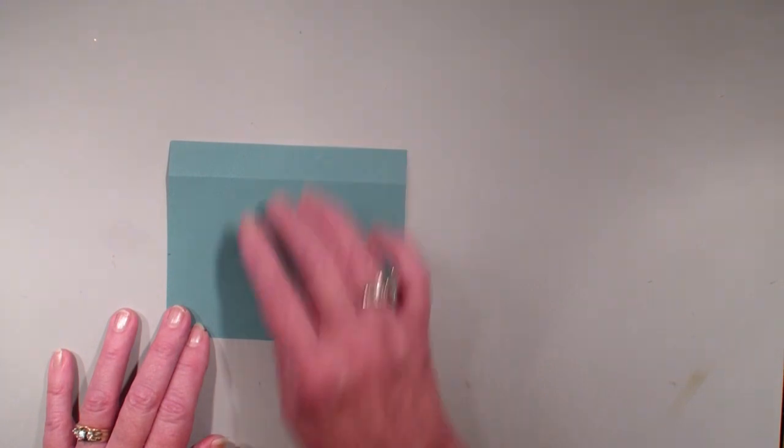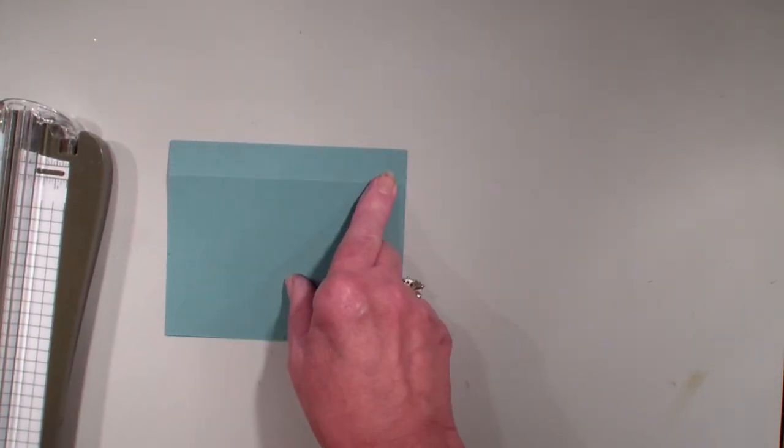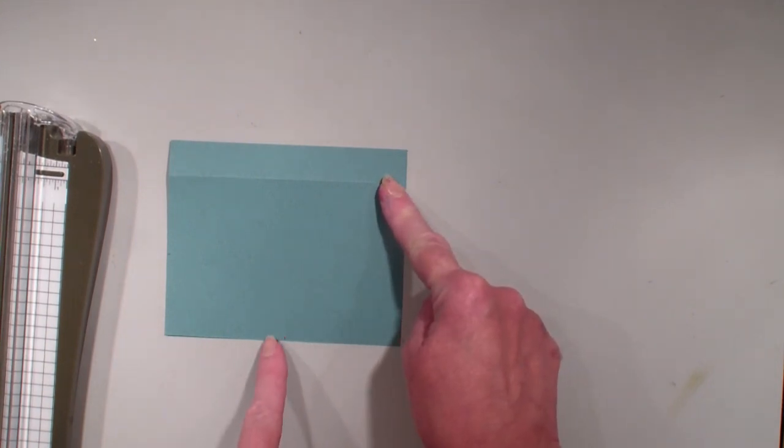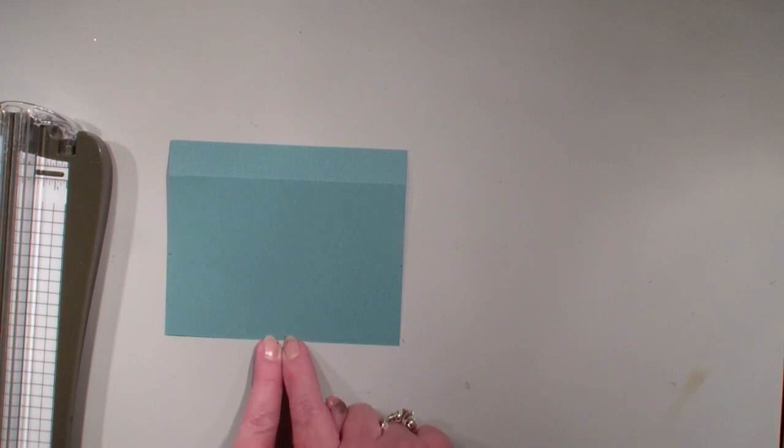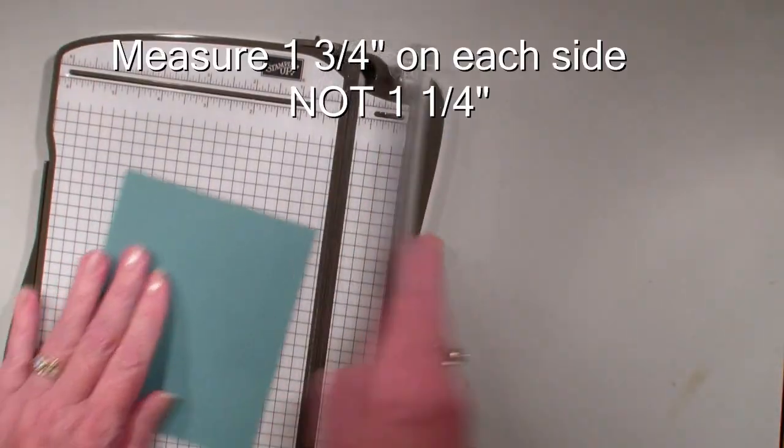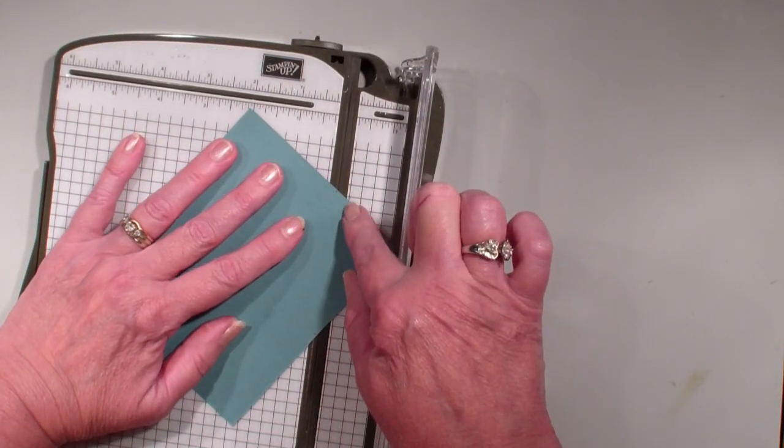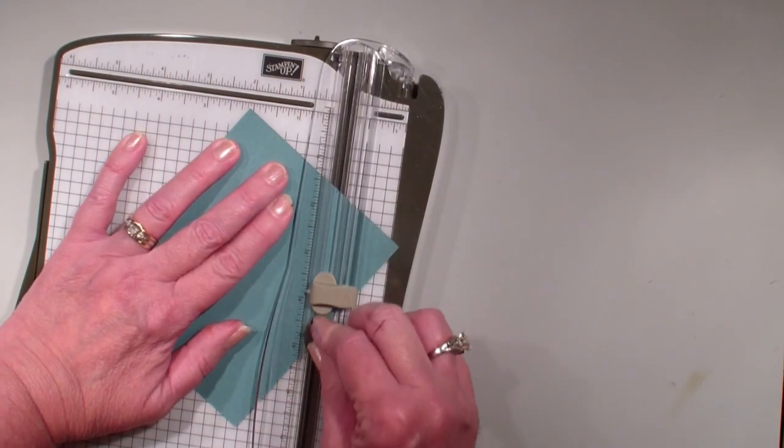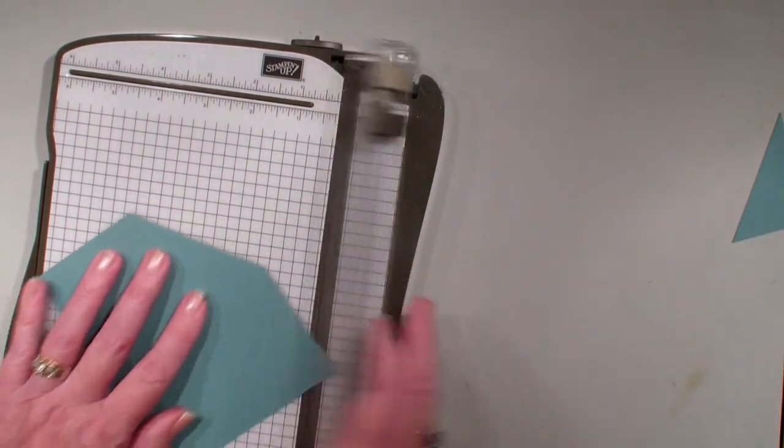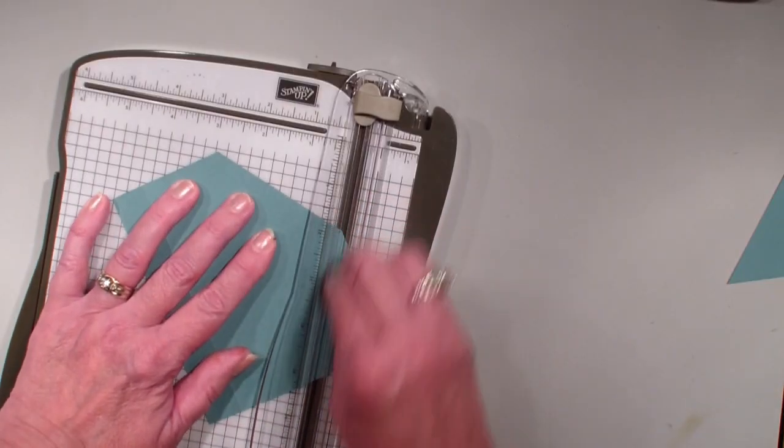I have already taken a piece of Lost Lagoon, this measures five and a quarter by four, and I have scored it at the three-quarter inch mark. I've also put a pencil mark, don't know if you can see it on the video, at two and five-eighths and then one and a quarter up on each side. So I'm going to put that into my stamp and trimmer, line my dots up in the groove of my trimmer, and just cut those off like so.